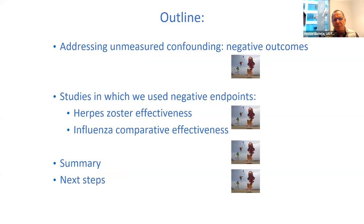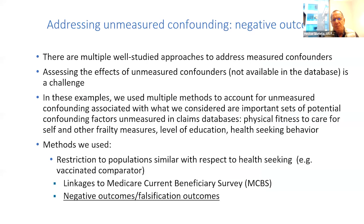I'm going to discuss how we intended to address unmeasured confounding using negative outcomes and other methods, studies in which we have used negative endpoints, and summarize our findings and proposed next steps. There are multiple well-studied approaches to address measured confoundings. To address the effect of unmeasured confounding not available in the database is a challenge, and this is a particularly important challenge for claims studies. In the examples I'm going to present, we use multiple methods to account for unmeasured confounding—physical fitness to care for self, frailty measures, level of education, and health-seeking behavior.